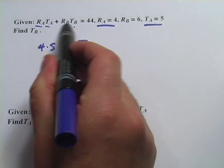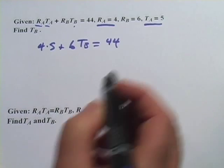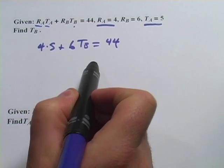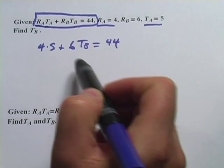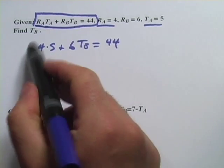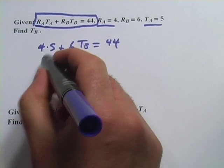And then we have t sub b. And they told us this whole thing equals 44. They want us to find or solve for t sub b, and that should be a piece of cake. So 4 times 5 is 20.